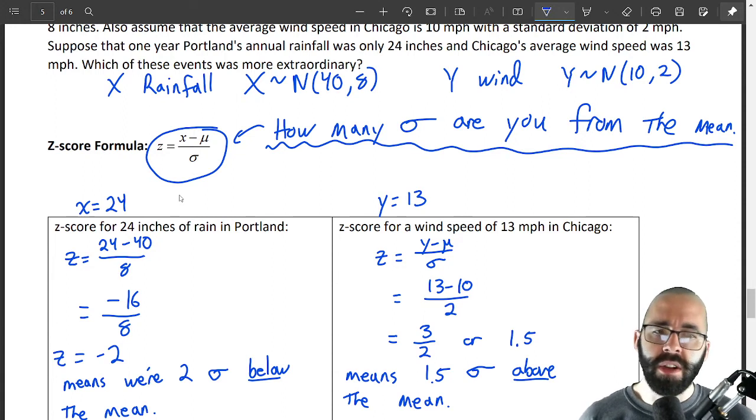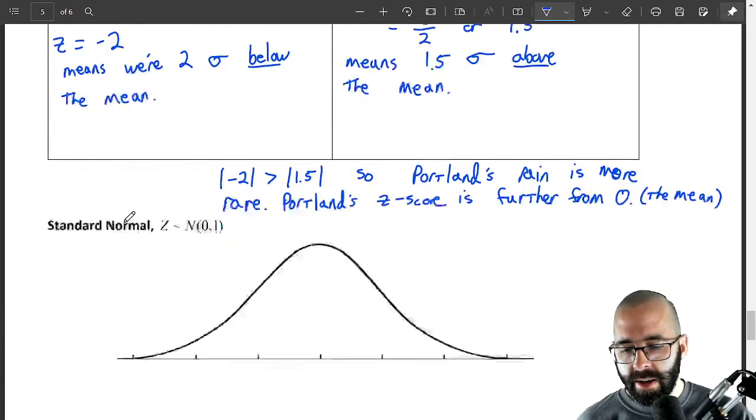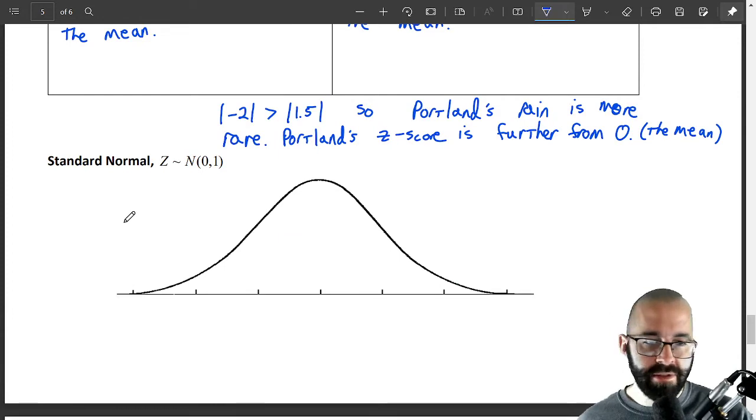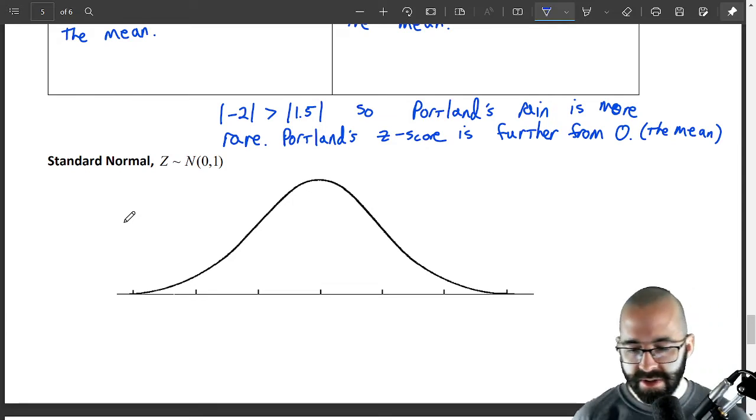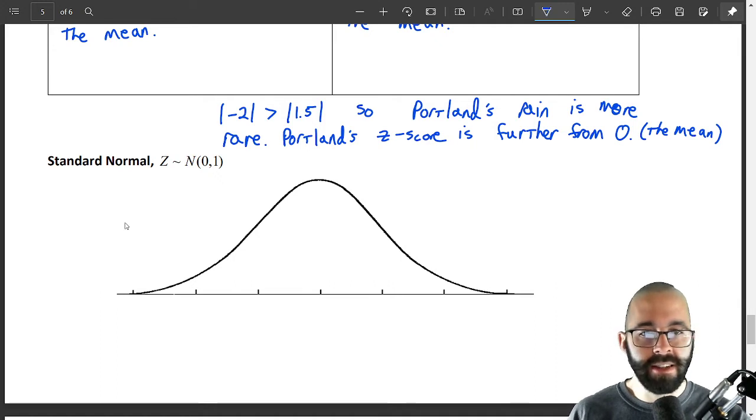They used to be used a lot more for probabilities than they are now, because people didn't have so much access to things like GeoGebra. And so we had to make little tables and convert things to standard normal so we can use the tables. But if we wanted to graph the standard normal curve, it's very easy.